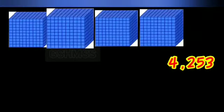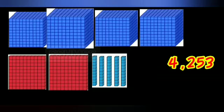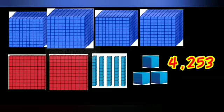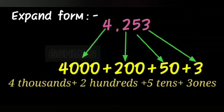The next example is four thousand two hundred and fifty-three. Here I have drawn four thousand cubes, two hundred flats, five ten towers, and three ones. This is the expanded form of four thousand two hundred and fifty-three. Four in the thousands place, two in the hundreds place — so I wrote four thousand plus two hundred plus fifty plus three.